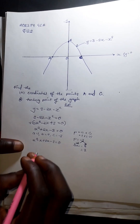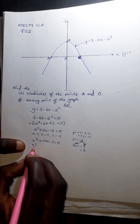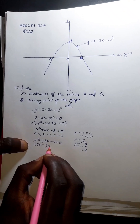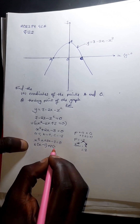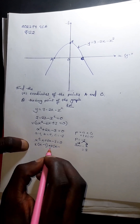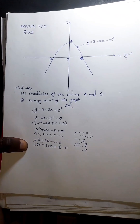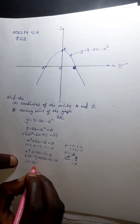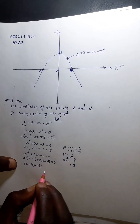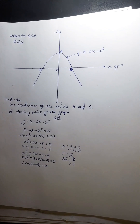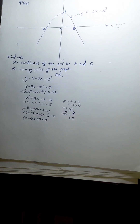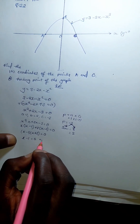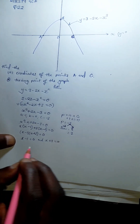Factorizing by grouping: from the first two terms, x is common giving x(x − 1); from the last two terms, +3 is common giving 3(x − 1). So we get (x − 1)(x + 3) = 0.